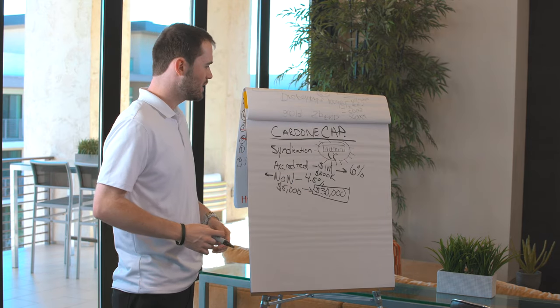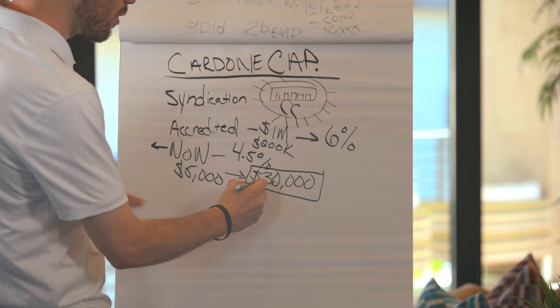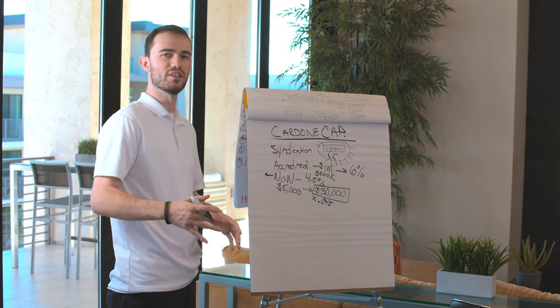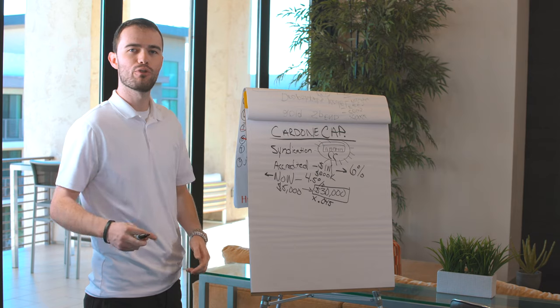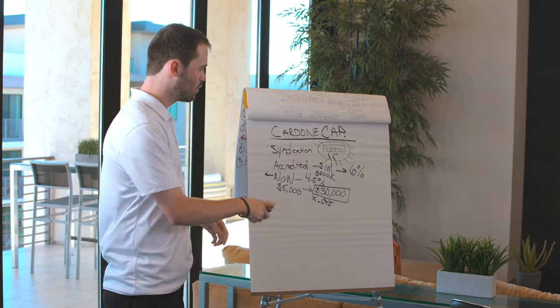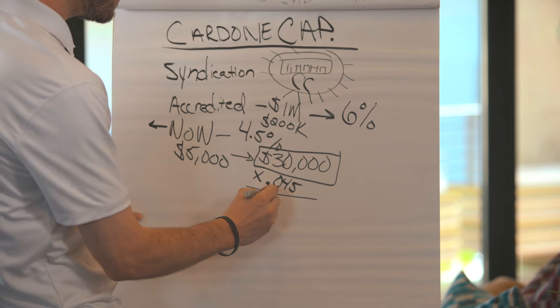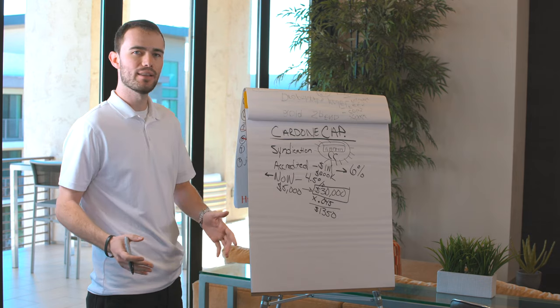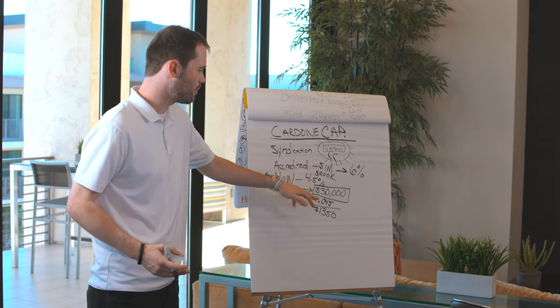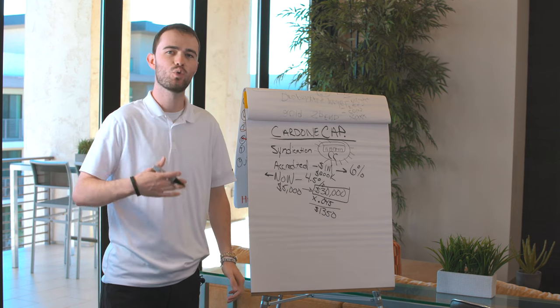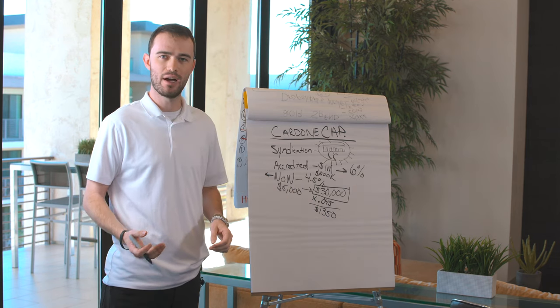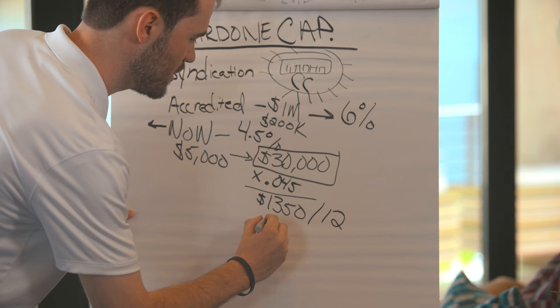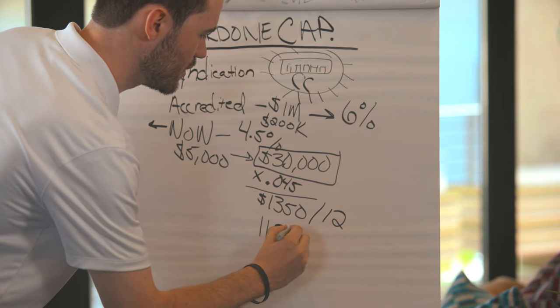So the first thing you're going to want to do is you're going to want to take this $30,000, you're going to want to multiply it by 0.045. 0.045 enables you to get the multiplication for 4.5%. When you do that, you're going to get $1,350. So what does that mean? That means that on a $30,000 investment, a 4.5% return at the end of one year is $1,350. So if you want to know how much you're going to make per month, simply divide that number by 12, which equals $112.50.